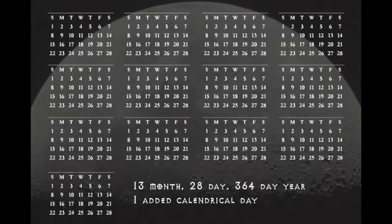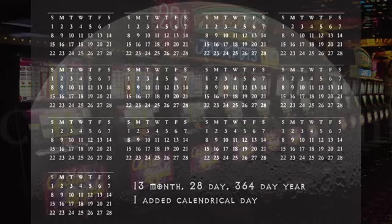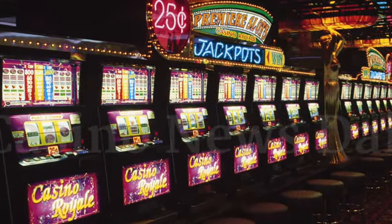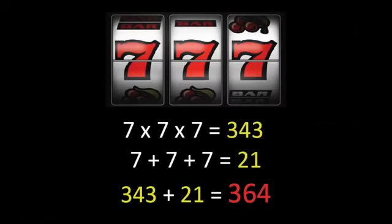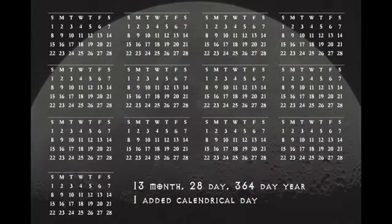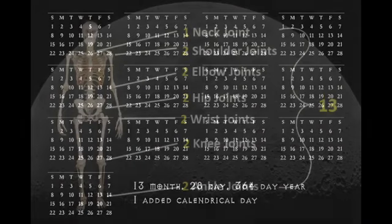The number 364, unveiled to us in a 13-month 28-day calendar, is found hidden in a bunch of different places. Have you ever gone to the slots and pulled them down hoping for that lucky jackpot of triple sevens? Well, doing a little math reveals that 7 times 7 times 7 equals 343, and 7 plus 7 plus 7 equals 21, and 343 plus 21 sums to 364 — the exact same number created by a 13-month 28-day calendar, with this calendar created by the human body.